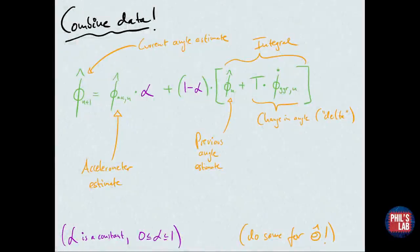Then it is time to combine the data, and this is the essence of the complementary filter. Here's the formula. On the left-hand side, which is our output, is our angle estimate—roll or pitch. This equals our accelerometer estimate multiplied by this constant alpha, which is between zero and one. The angle estimate is some combination of the accelerometer estimate plus an estimate using the gyroscope. The gyroscope estimate uses the previous angle estimate, the previous output of the complementary filter, and we add to that the change in angle.